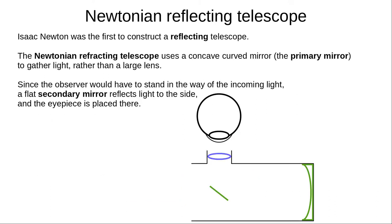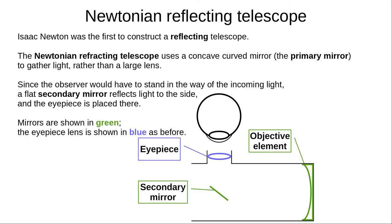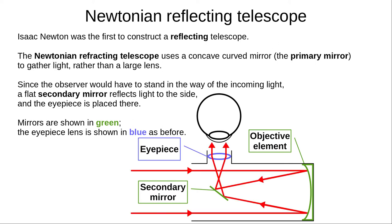Refracting telescopes use a lens as their objective element. Isaac Newton was the first to construct a reflecting telescope, which has a curved mirror instead. To see the reflected light, the observer would have to stand in the way of incoming light, so Newton added a plain mirror to reflect light to the side and placed the eyepiece there. Mirrors are shown here in green while the eyepiece lens is shown in blue. The objective mirror is called the primary mirror, and the plain mirror is the secondary mirror. The ray diagram is a little more complex for a reflecting telescope.